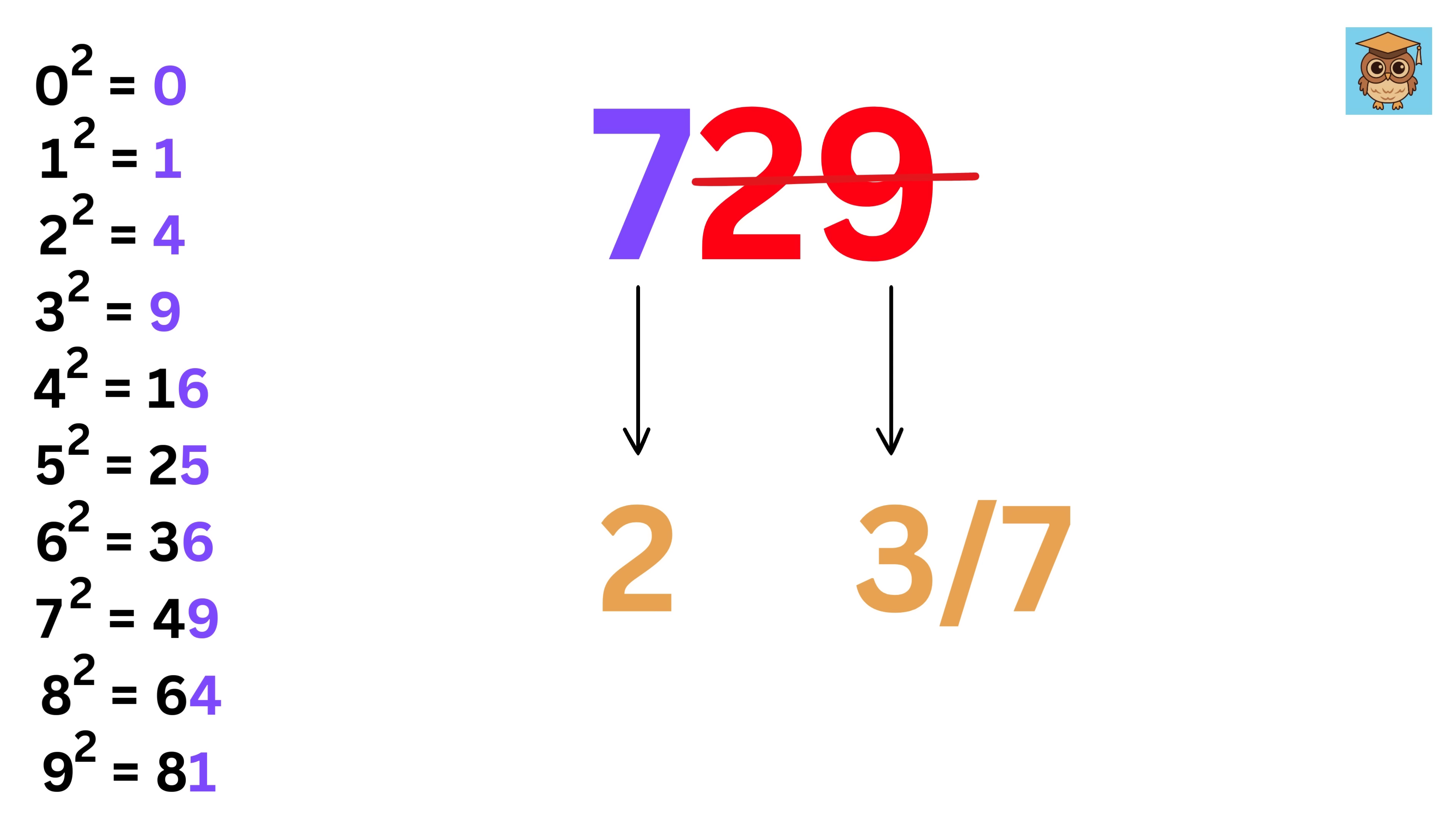To find the correct number, take this 2 here and multiply it by the next number after it, which is 3. So, 2 times 3 will be 6. Finally, what we will do is compare this 6 with this number, which is 7.